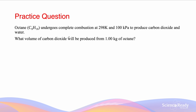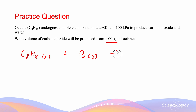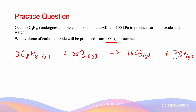Since we are given a mass for the octane — 1 kg — we need to use this to calculate the number of moles. We should always begin by writing the balanced equation. Octane C8H18 reacts with oxygen in a combustion reaction, producing CO2 and water vapor. We add the coefficients 2, 25, 16, and 18 to balance the equation.